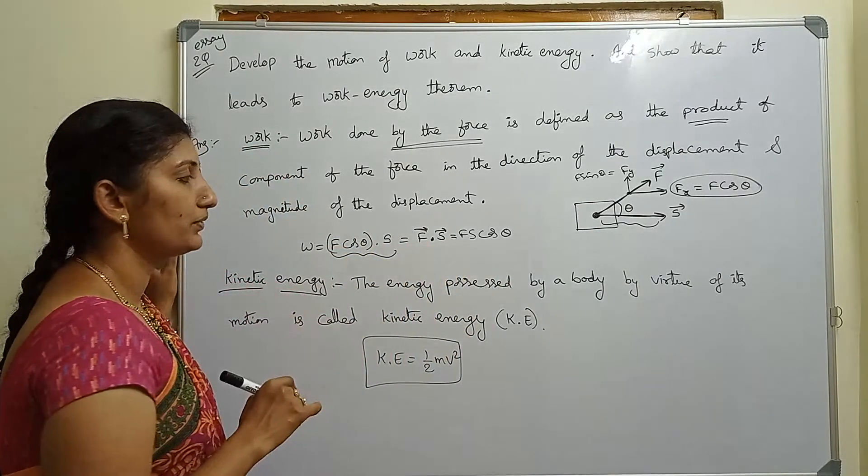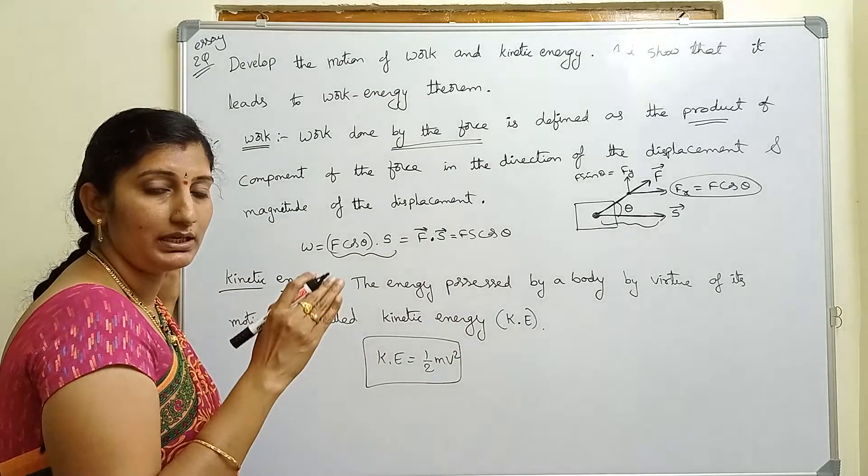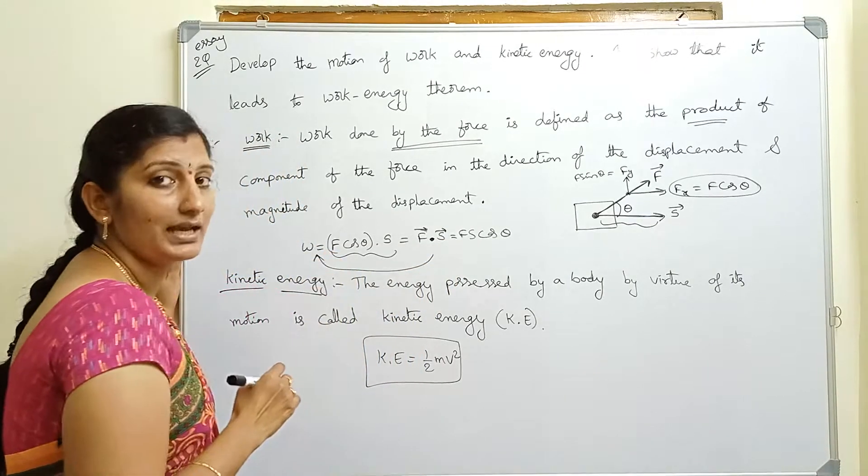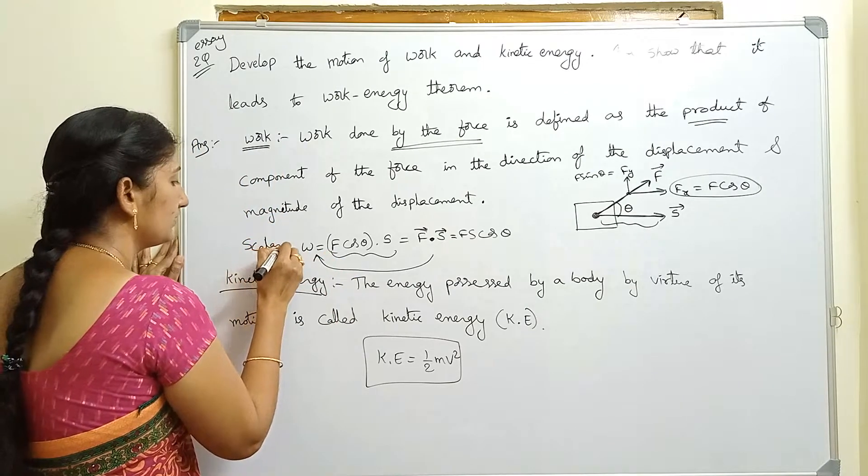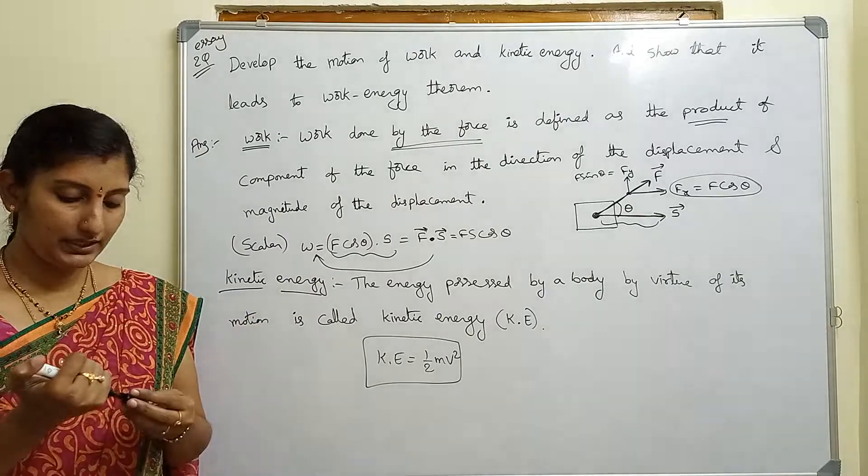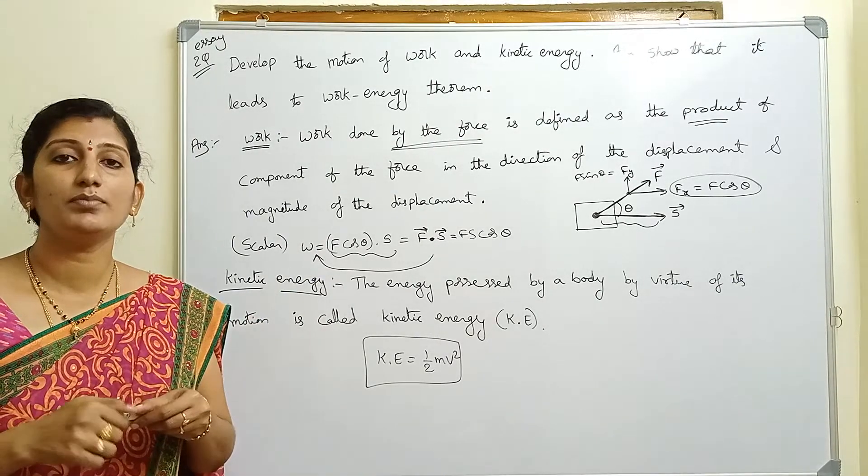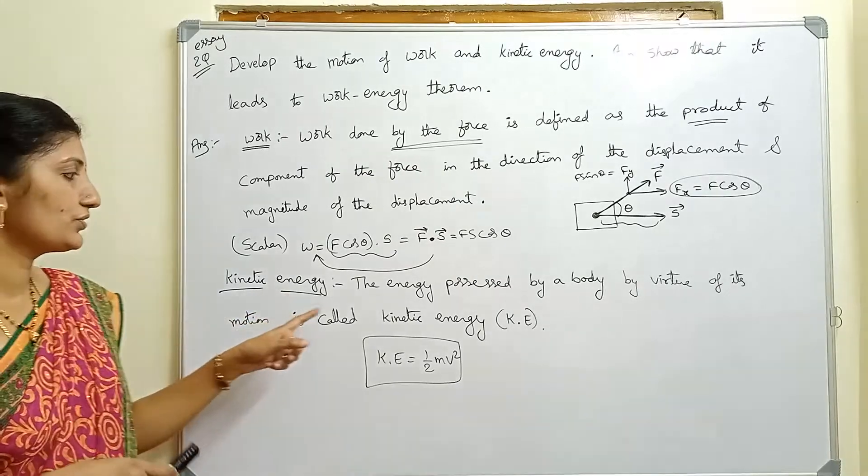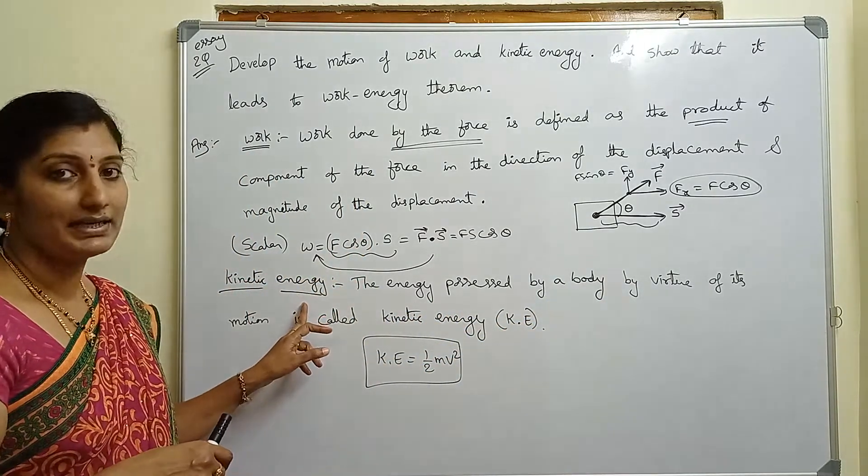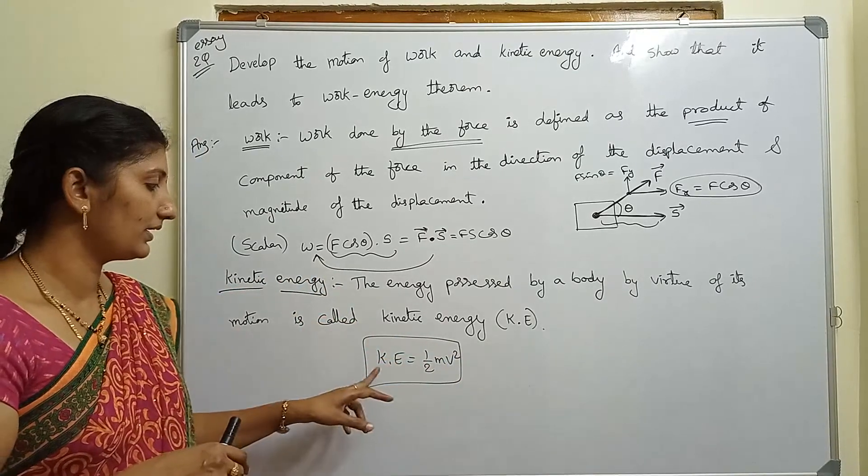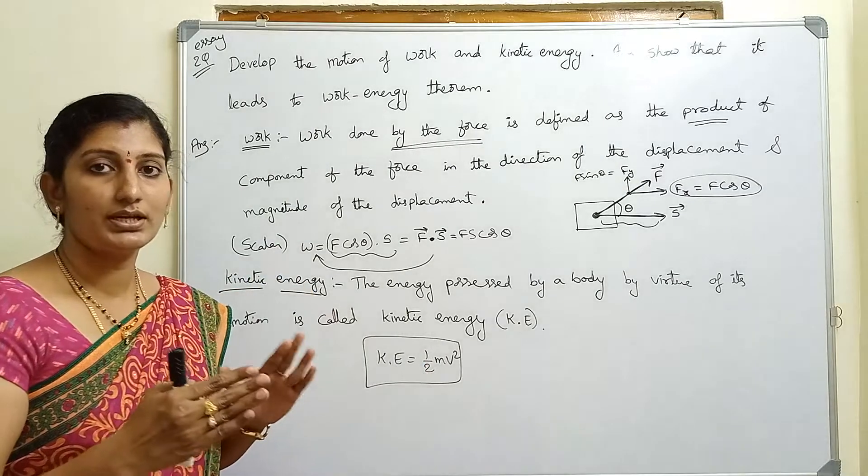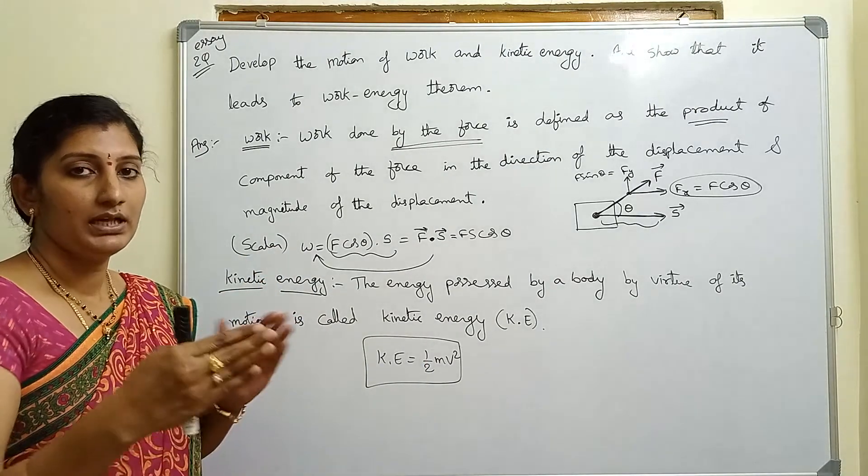We use the dot product, F vector dot S vector. The dot product gives us a scalar, and work is a scalar quantity. Next one is kinetic energy, which I already discussed in previous class. Kinetic energy is the energy a body has due to motion.